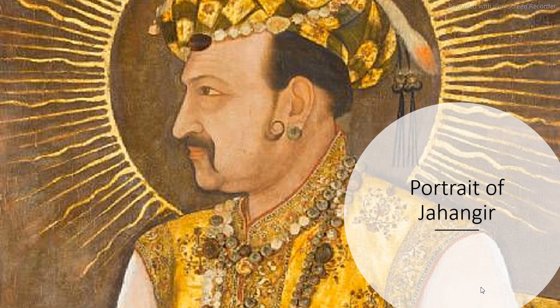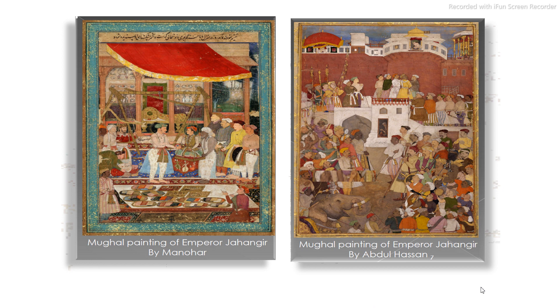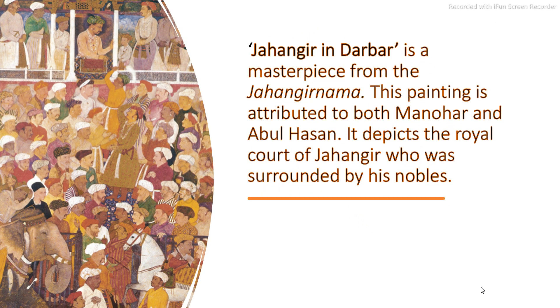This is a portrait of Jahangir — look at the halo behind the face. These are two other paintings: one is by Manohar and the right one is by Abul Hassan. Both are Mughal paintings during the reign of Jahangir. Jahangir in Darbar is a masterpiece from the Jahangir Nama, attributed to both Manohar and Abul Hassan. It depicts the royal court of Jahangir surrounded by his nobles.